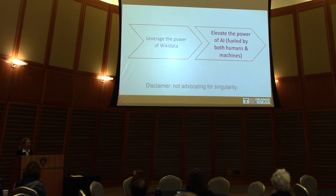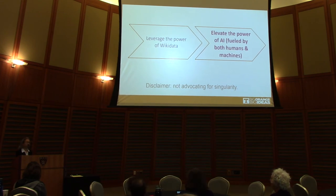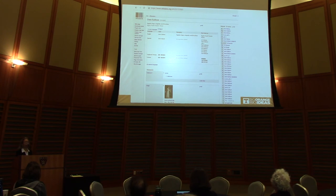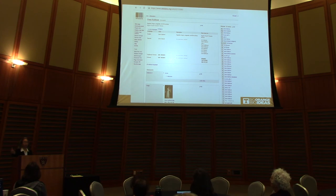I pondered how we can leverage the power of Wikidata to elevate AI built by both humans and machines — not just one or the other. This is a symbiotic relationship between human and machine. I also have many questions about data security and ownership. If I put my time and labor into the Wikimedia Foundation, what does that mean for the project model in terms of return on investment? I have many questions about that.